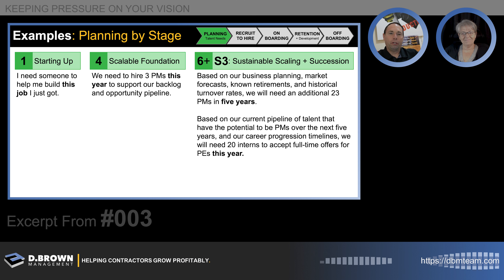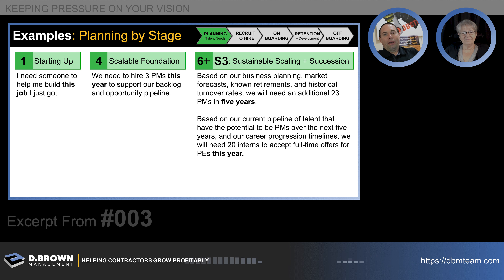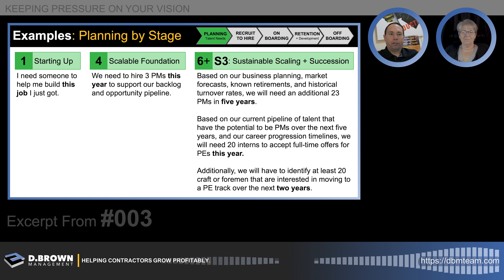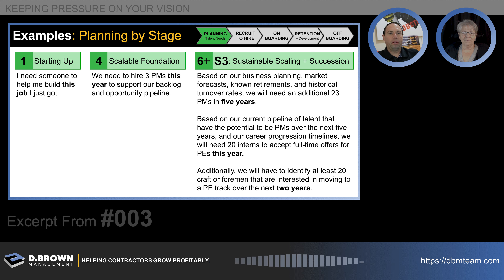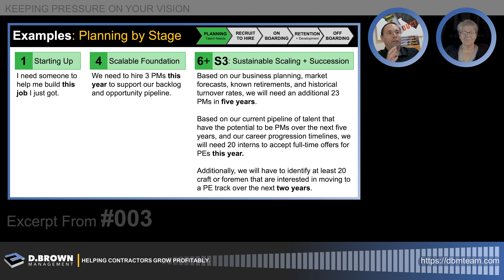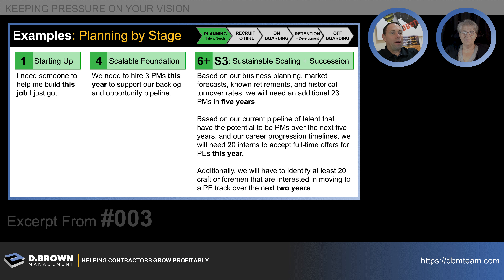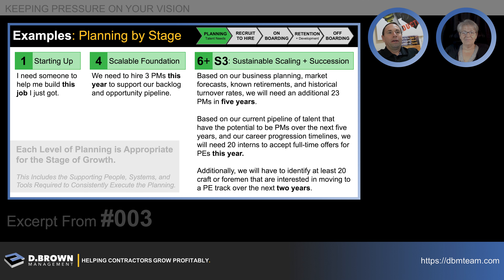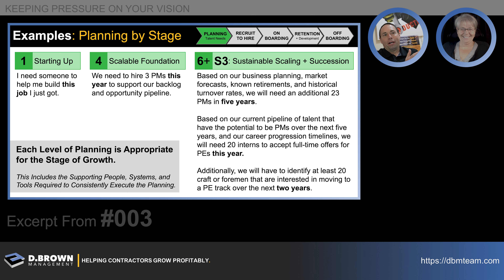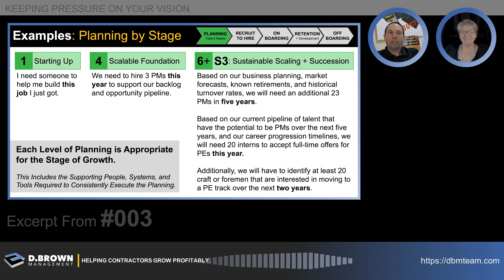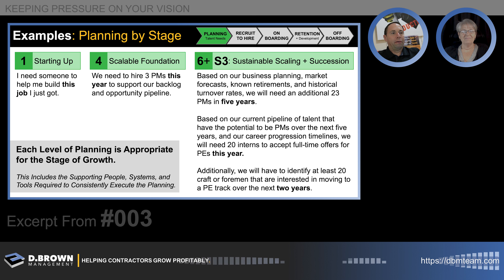Additionally, we have to identify at least 20 craft or foremen that are interested in moving into the PE track over the next two years. Depending on the company, you might be pulling people from the college track or the field track into the PE role. Every stage is appropriate for its stage of growth. If you try to do the stage-six process when you're at stage one, you won't have a customer tomorrow because you forgot to build the project. If you're still going hand-to-mouth at stage four, you need too many people and you're just constantly reacting. It's really important to know where you're at and align to it.